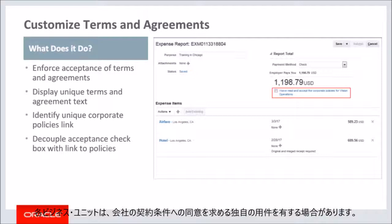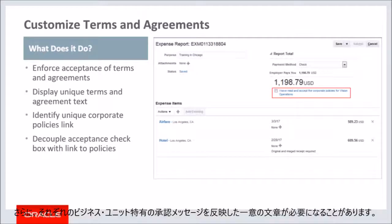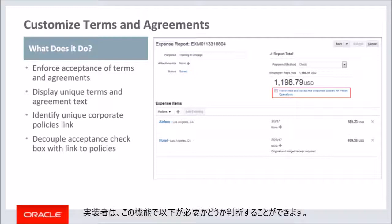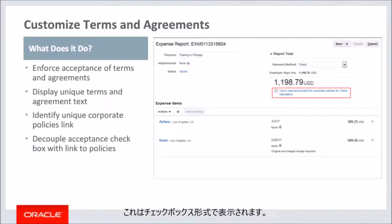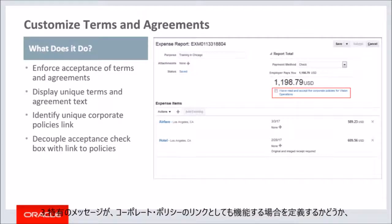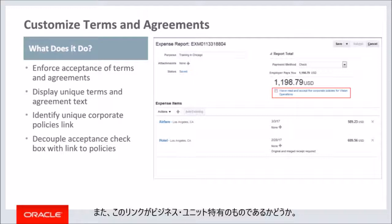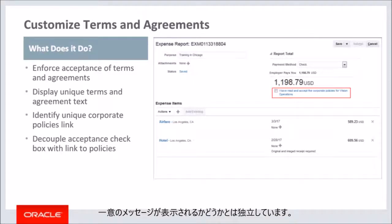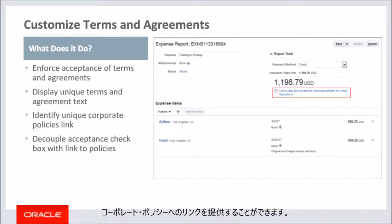Each business unit may have their own requirements related to enforcing acceptance of the company's terms and agreements. With this feature, implementers can decide to: enforce acknowledgement that the employee understands the corporate policies (presented as a checkbox); create unique terms and agreements messaging specific to a business unit; and define when specific messaging will also act as a link to the corporate policies, specific to the business unit. Acknowledgement via checkbox is independent from whether a unique message is displayed — implementers may provide a link to corporate policies without forcing the employee to acknowledge their acceptance.